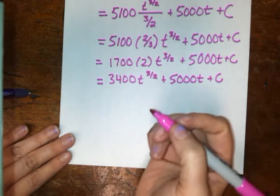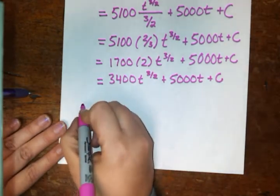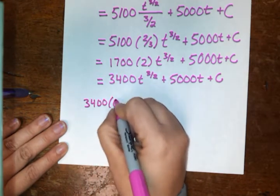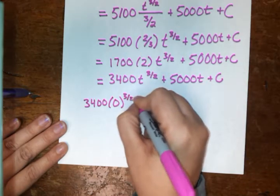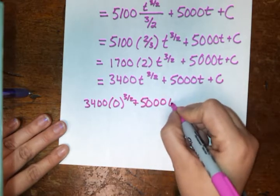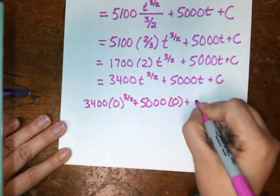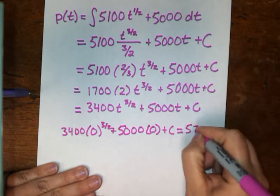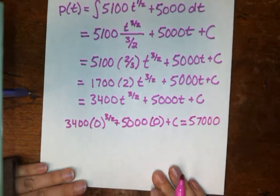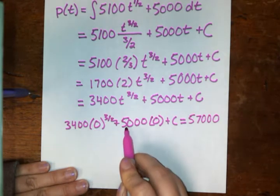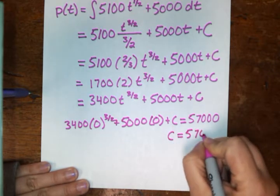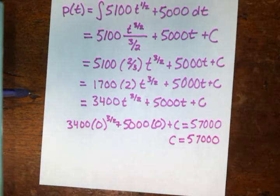Well then let's just plug that into our function here. So what we want is for p of t, 3,400, we're just going to plug in zeros for each of the t's. And this is going to wind up being a very simple problem to solve. Zero plus c, and that equals, when we plugged in zeros, we're supposed to have that equal to 57,000. Well, guess what? 3,400 times zero is zero. 5,000 times zero is zero. That just leaves us with c, so our c equals 57,000.